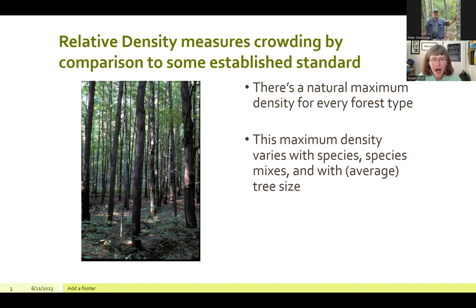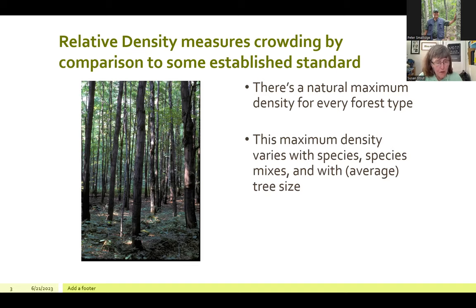It's pretty easy to recognize when the basal area around you is 120 square feet — it's tempting to use that tangible guideline for managing partial cuts. But 120 square feet means one thing in a cherry stand whose natural maximum density often goes up to 190–200 square feet per acre, and something completely different in a sugar maple dominated stand whose maximum density might be right around 120 square feet per acre.